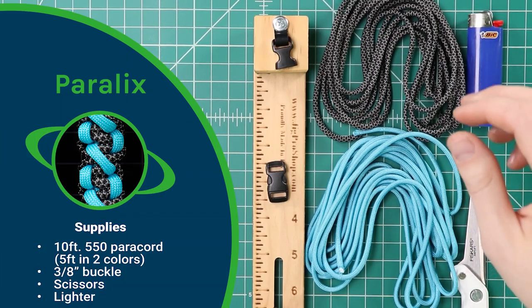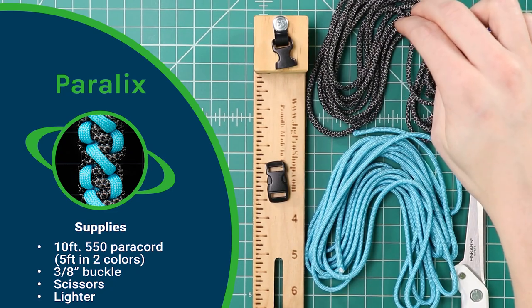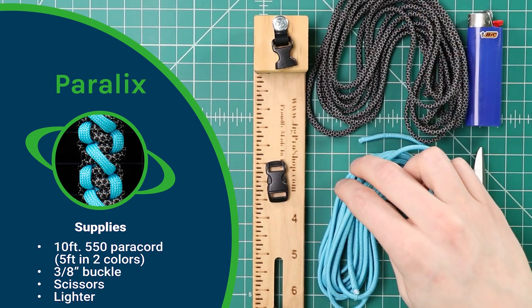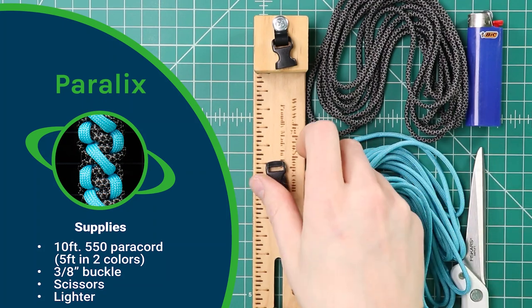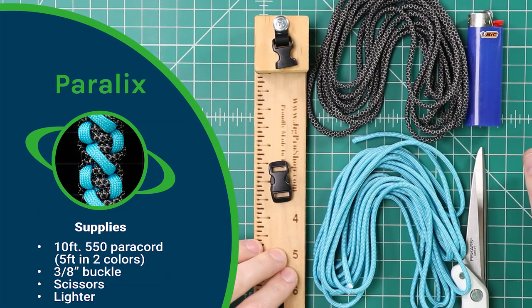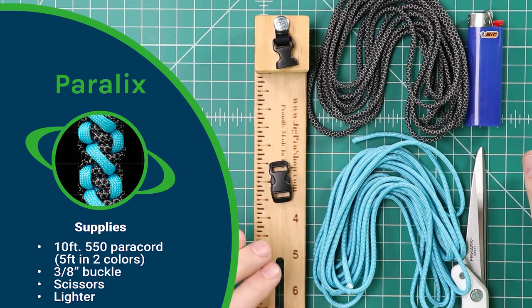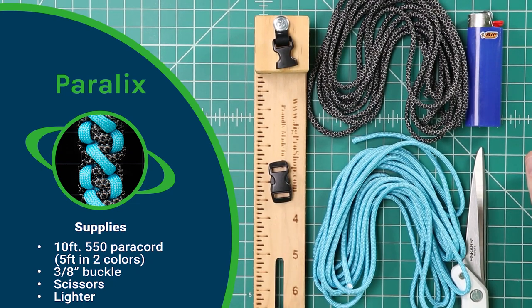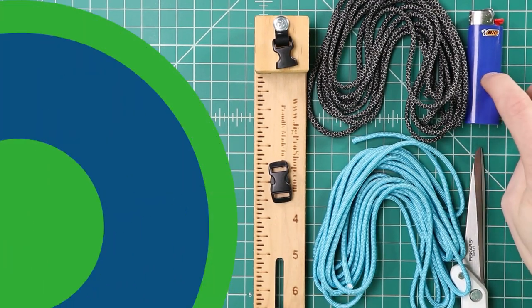So for this project I've got two different colors of 550 cord, charcoal and black diamond, and I've also got neon turquoise. I'll be using a 3 1/8 inch buckle. I'll also be using a bracelet jig which isn't entirely necessary but it makes things a lot clearer on camera to show you guys. For tools you'll just need a scissors and a lighter.